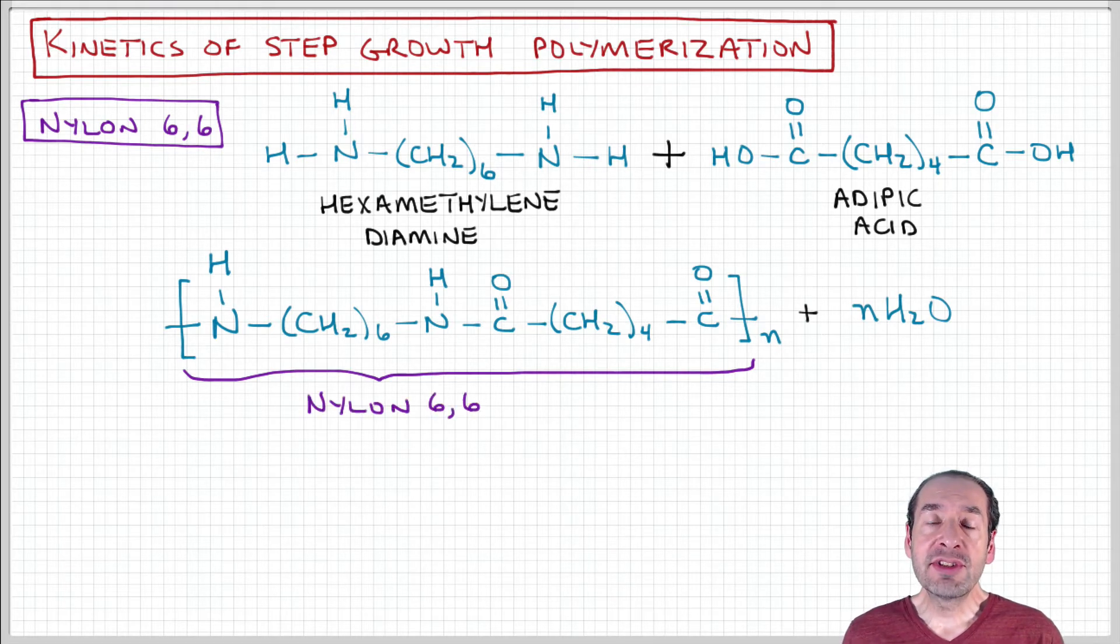As a way to think about this, remember we talked about nylons as an example of a typical step growth polymer where we have two monomer components that join to form a repeat unit and a condensation product.